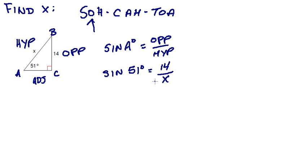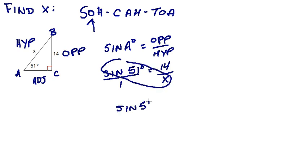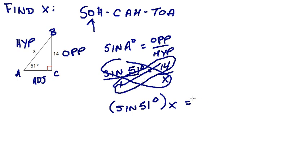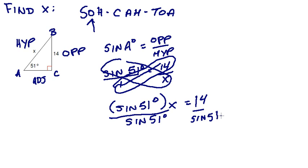Now we use our algebra skills to solve this. I like to think of these as a proportion, and I can cross-multiply. So the sine of 51 degrees times X equals 14 times 1, which is 14. Now to get X by itself, I need to divide off my sine of 51. These cancel, so X really is 14 divided by the sine of 51 degrees.